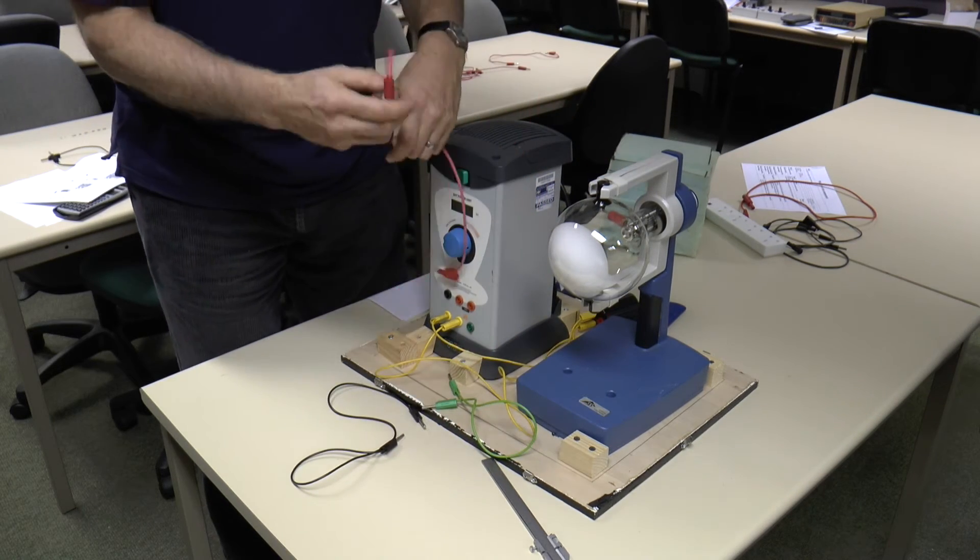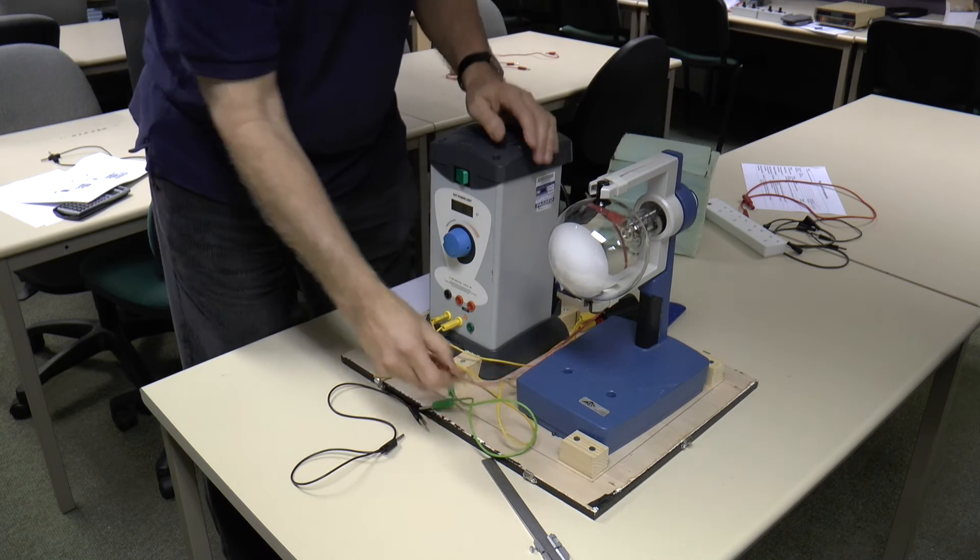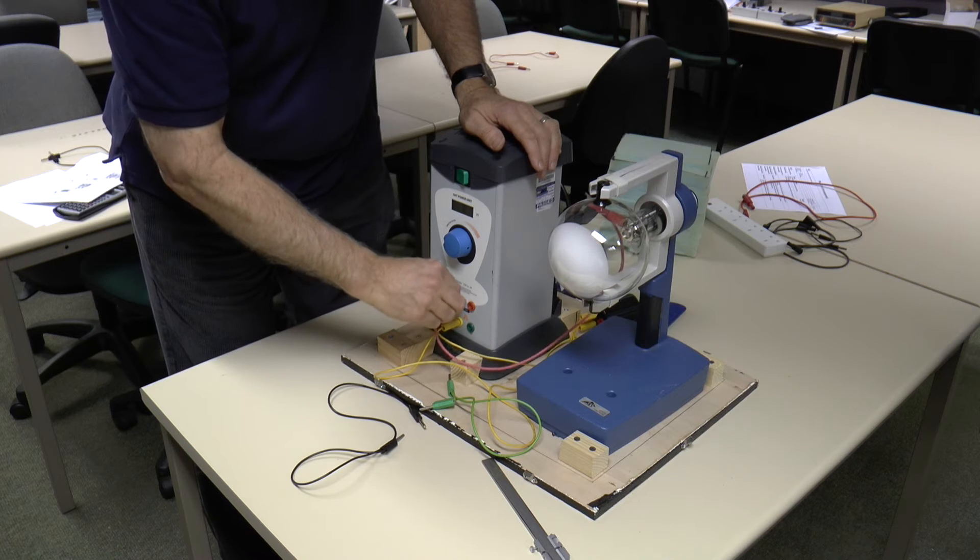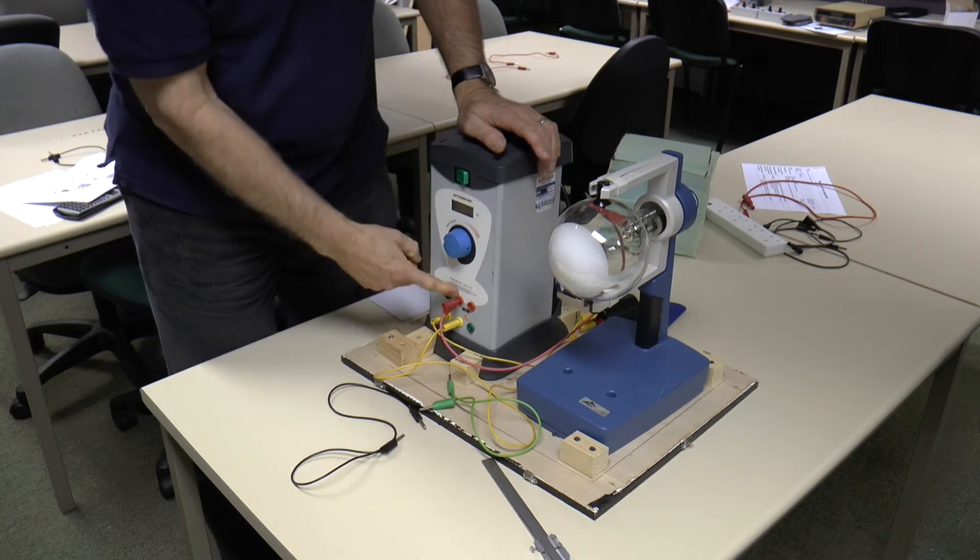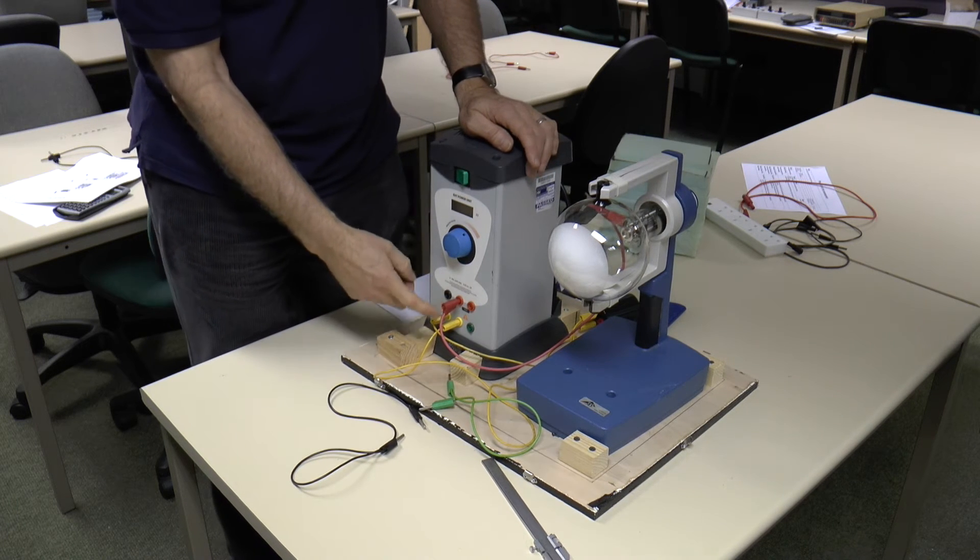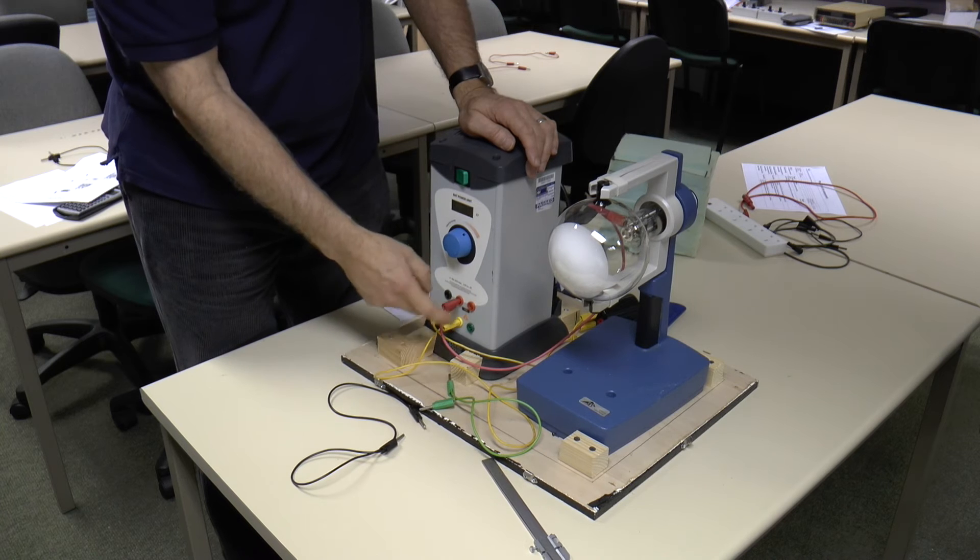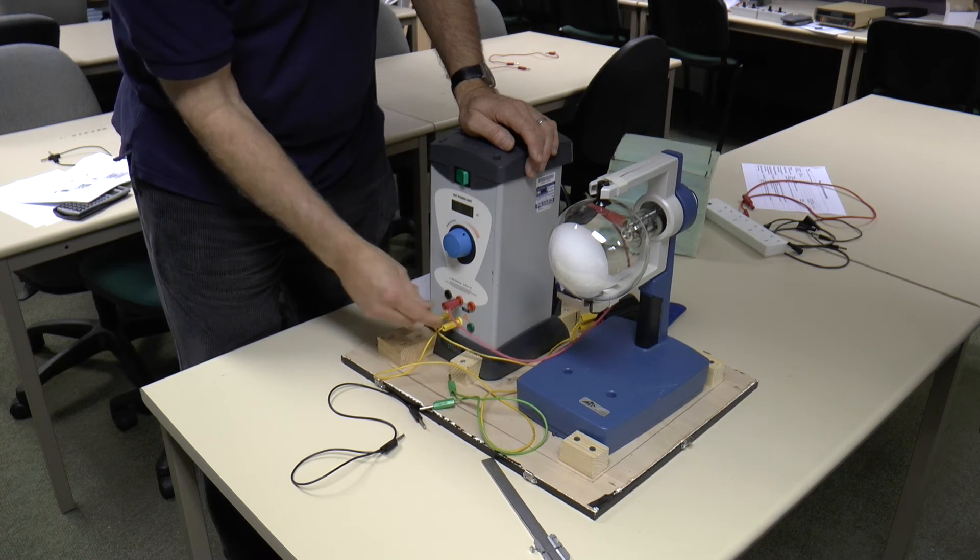So high tension red in two. Now we're using the unprotected high tension power supply because we can't get enough current for the electron diffraction with that one, so be aware of that.